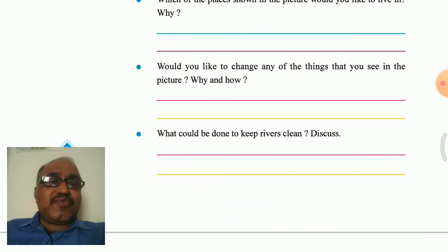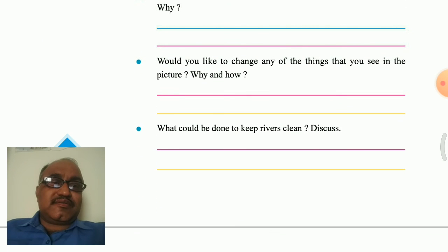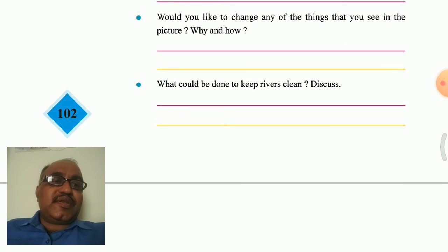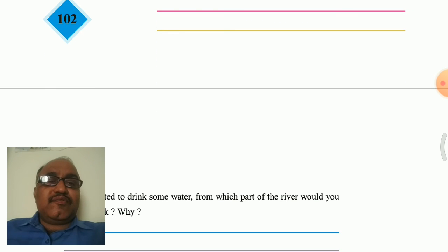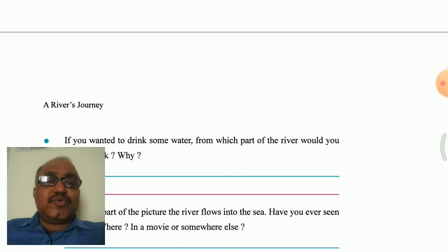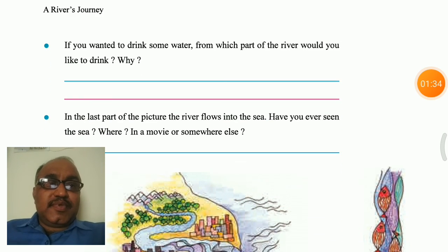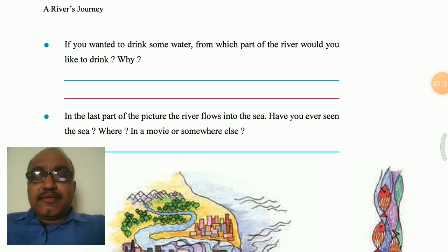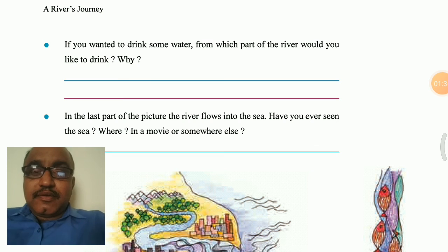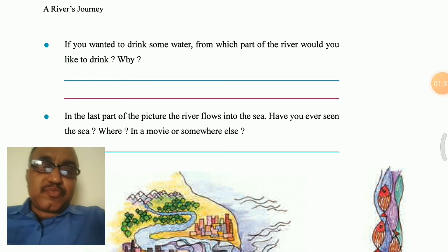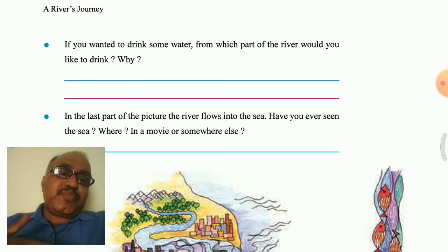The picture shown here — you can see that the river water color has changed because of factory waste. What could be done to keep our river clean? We have to make some proper measures to avoid pollution of it. Then there are some questions: if you want to drink, from which part will you drink?